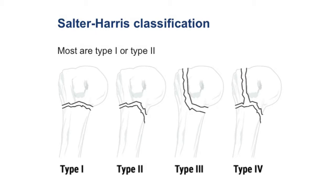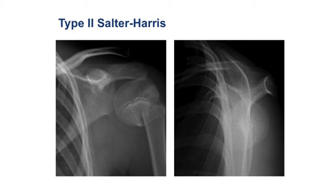they're considered a Salter-Harris fracture, one through five. This diagram shows only up to four — five is a crush injury to the epiphysis itself. Here is an example: you can tell it's skeletally immature because you can see the growth plate still intact, so this is a Salter-Harris fracture.